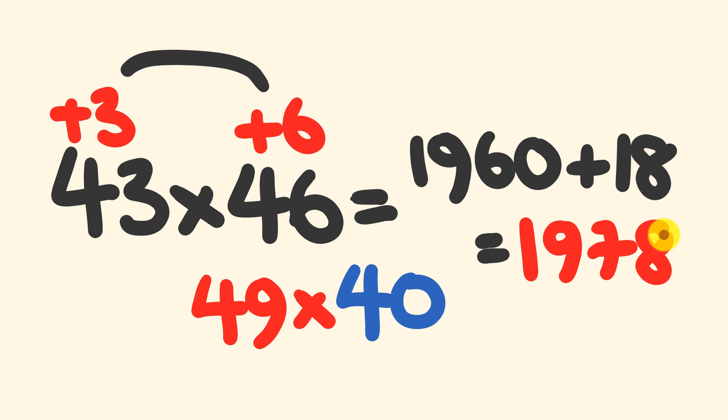So the first thing we did is we saw what the same tens value was. Then we saw how far each one of these was from that tens value. Then we did this cross addition, multiplied by the tens to get the first part, and then multiplied the units and added that on. Pretty simple. Do that a few times, you'll be doing that in no problems.